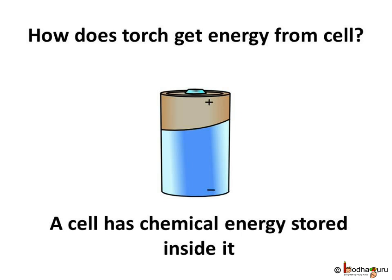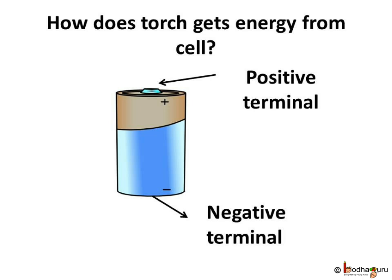An electric cell produces electricity from the chemicals stored inside it. When we connect the cell properly with the bulb, the chemicals produce electricity. Now look at the cell closely. One side is marked plus, that is positive, and the other side is marked minus, that is negative.